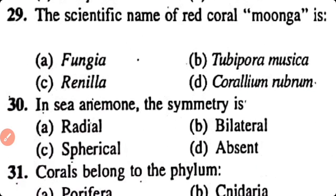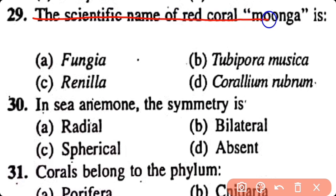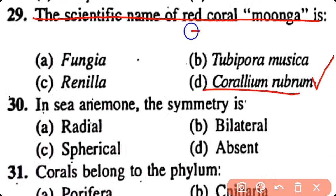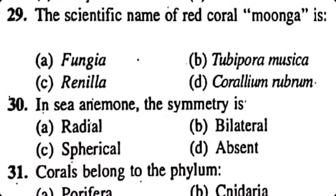Question number 29. The scientific name of red coral is: Fungia, Tubipora musica, Heraldilla, Corallium rubrum. Option D. Corallium rubrum is the scientific name of red coral.